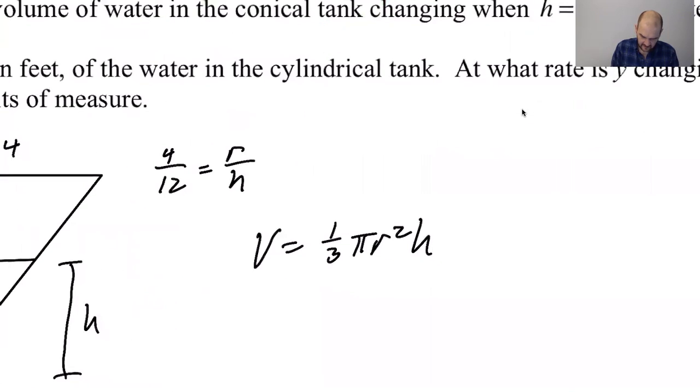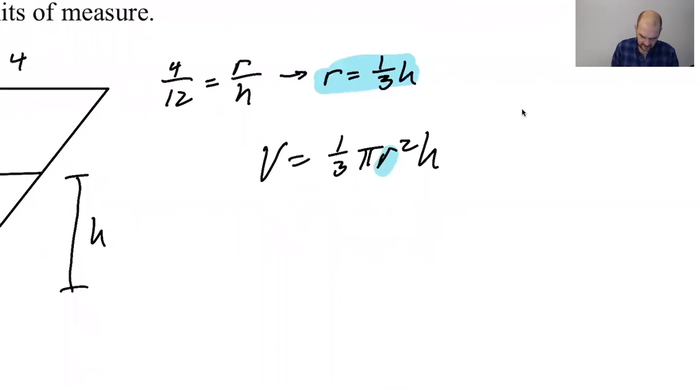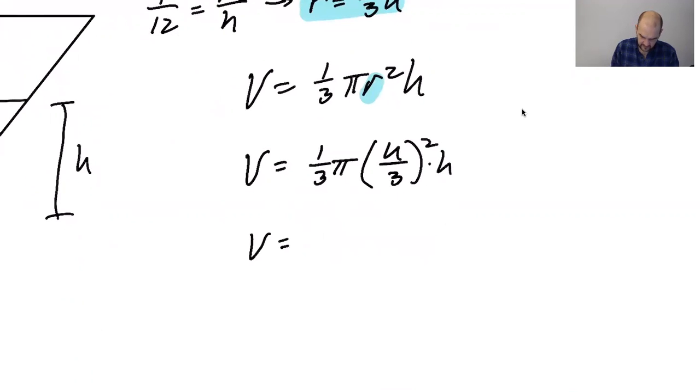So the volume is one third pi R squared H. So we want to get rid of R because we're supposed to get a function of H. So let's use this and say that R is equal to one third of H. And then we'll just take this and where we see R, we'll replace it. And suddenly this is just a function of H, which is actually a pretty common thing to do. So H over three squared times H. So we'll get the volume is pi over 27 H cubed.